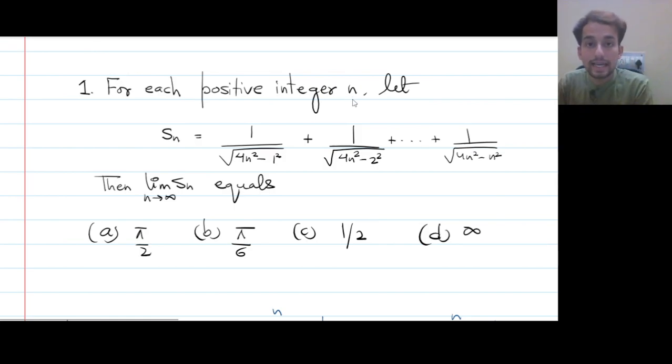For each positive integer n, that is n is a natural number, let Sn be a sequence of sum of these terms, which is given in terms of the index n. What it means is, suppose if you fix n to be 1, then every variable changes n by 1 and this will result in a finite sum.